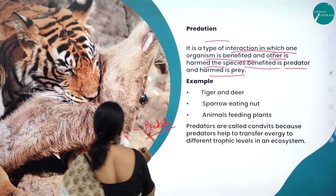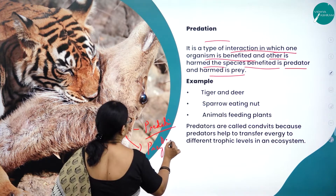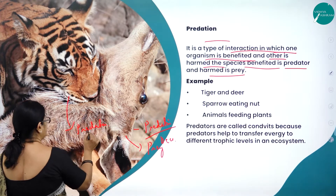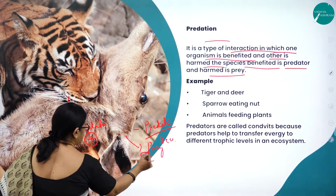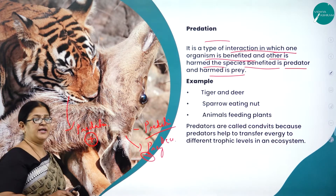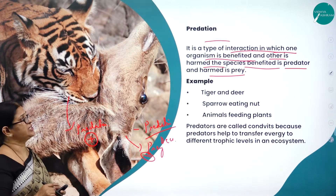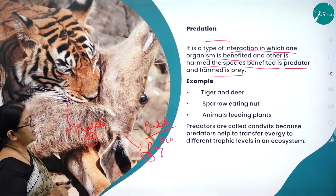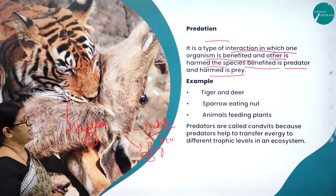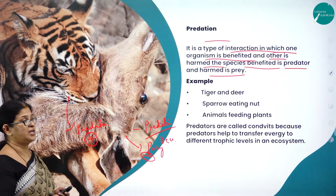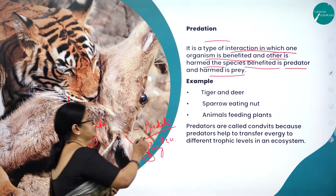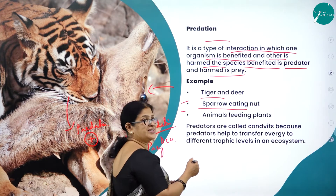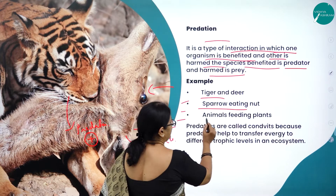The deer is the prey and the tiger is the predator — the predator is benefited and the prey is harmed. Examples of predation include a tiger and a deer, or a sparrow eating an insect — here the sparrow is the predator and the insect is the prey. Animals feeding on plants also constitute predation.